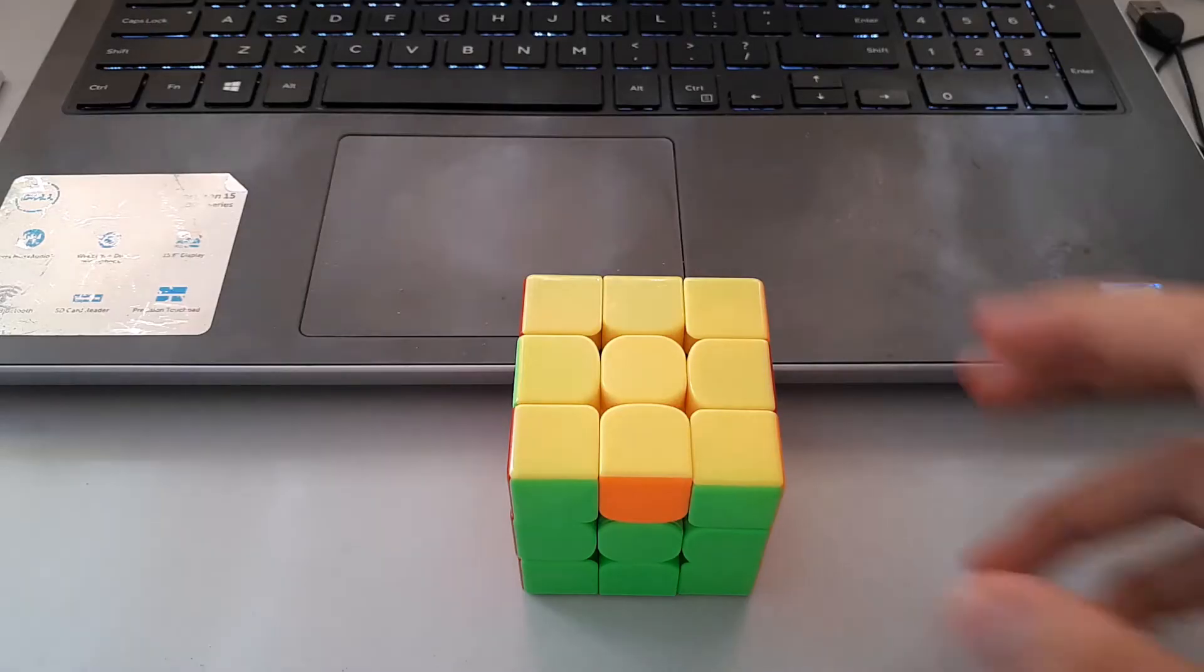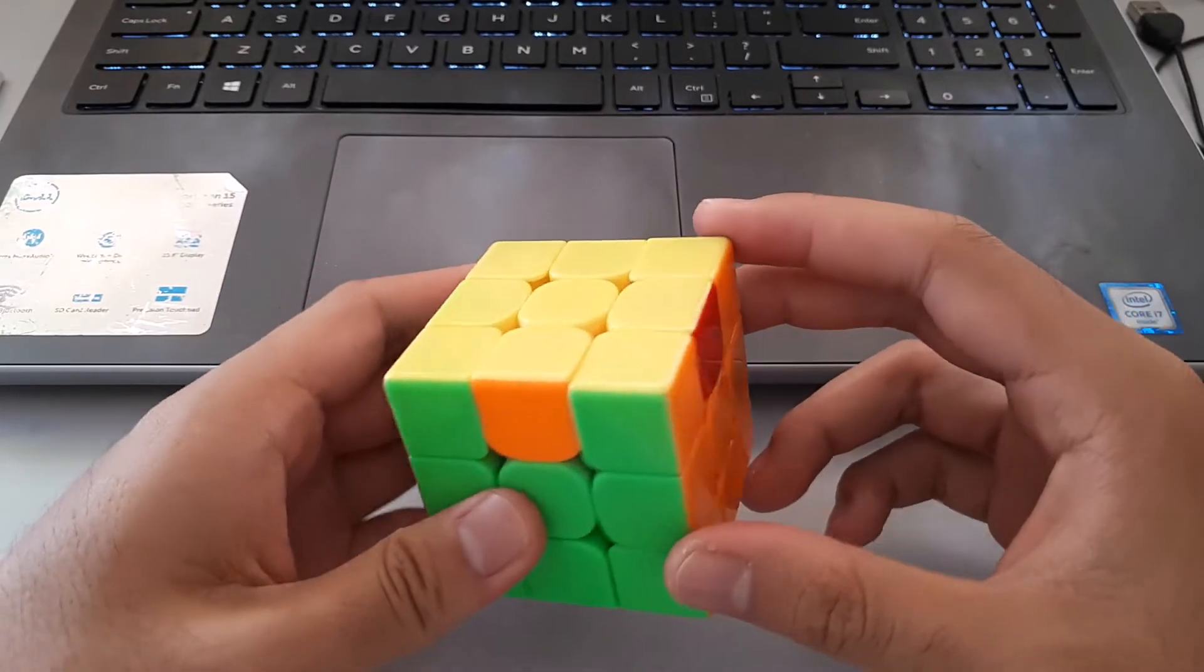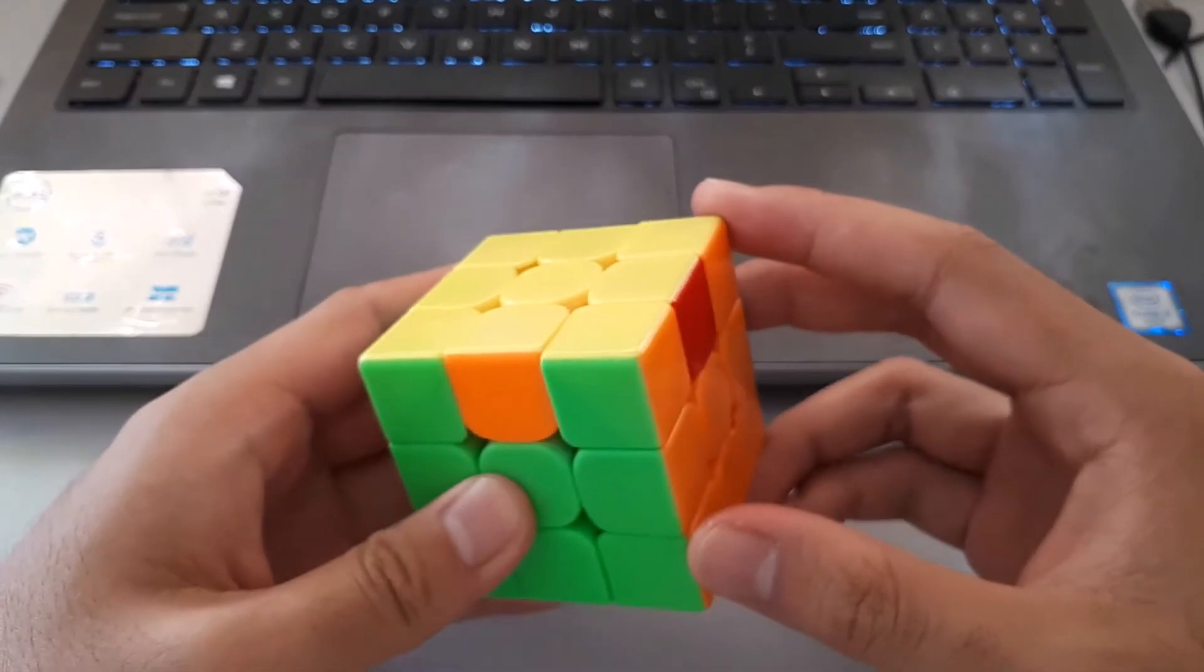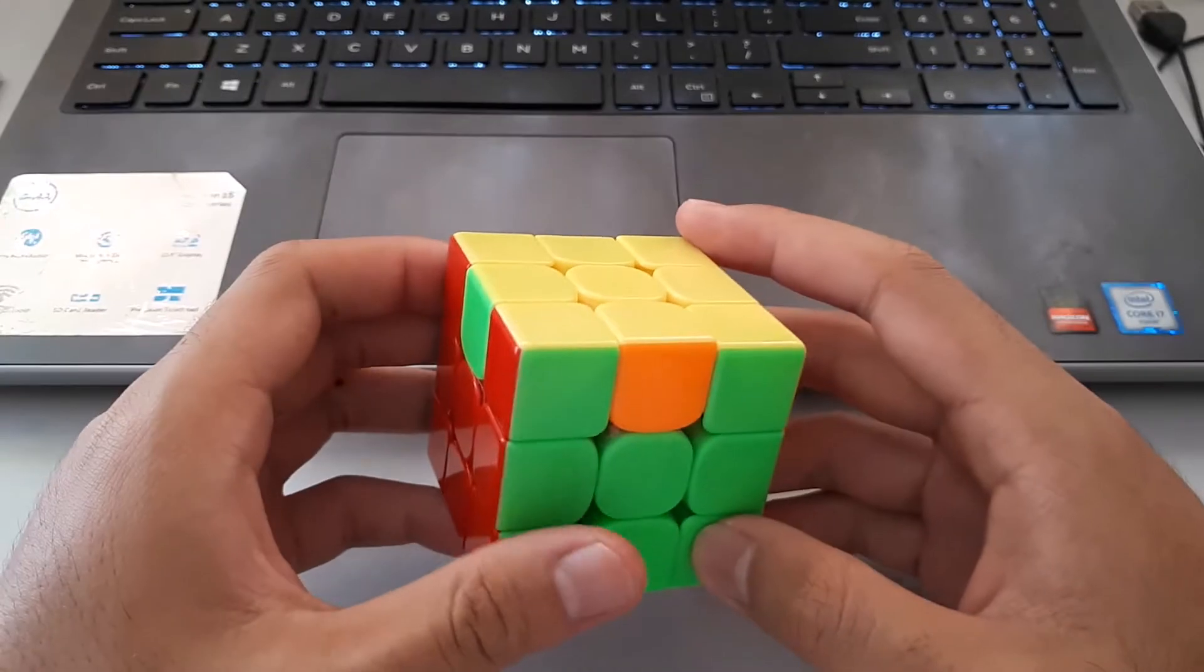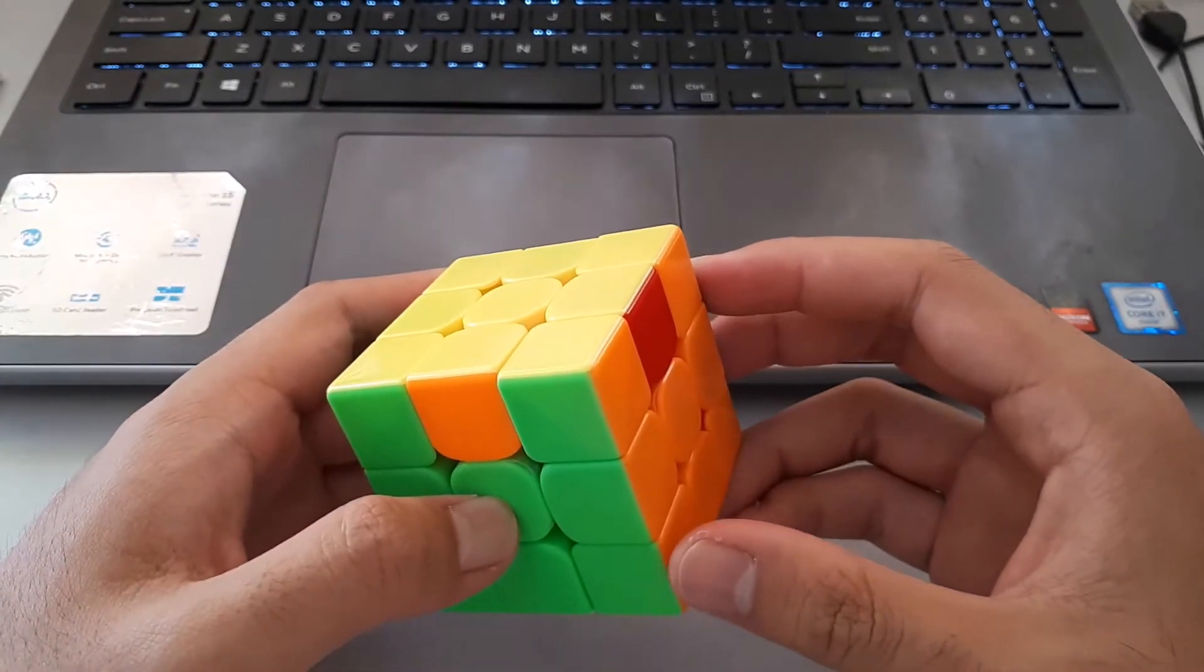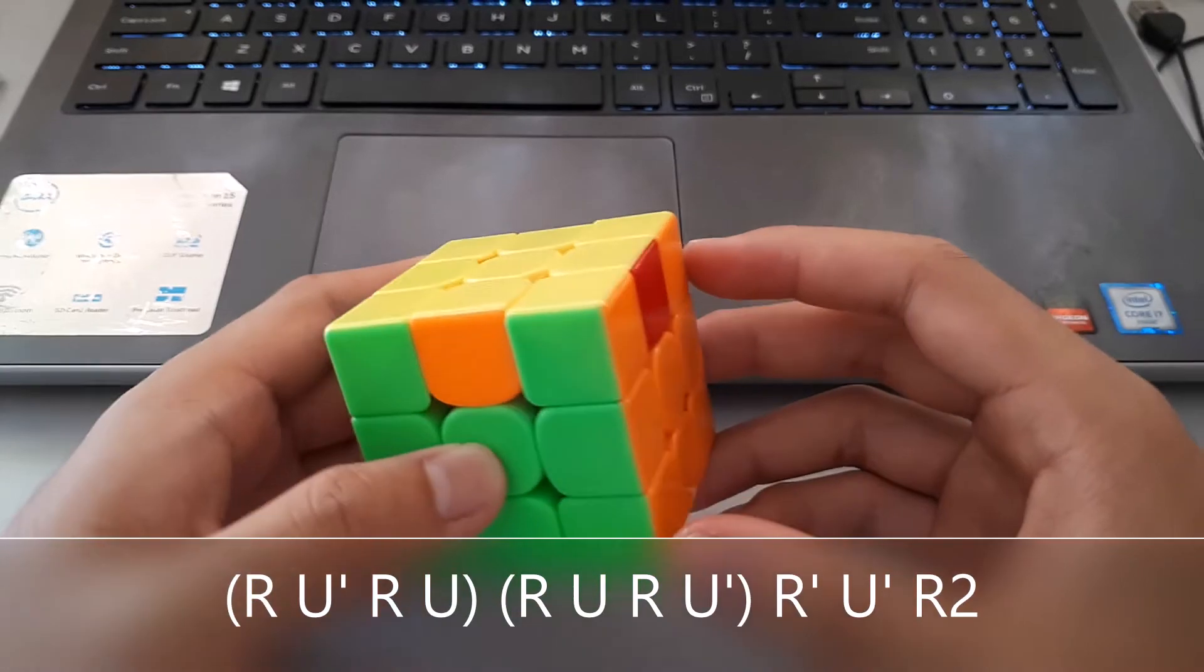So the most common way to do U-perms is the R-U algorithms. These are two-gen algorithms, so they are pretty fast and very commonly used as well. So this is the U-A perm and the algorithm goes like this.